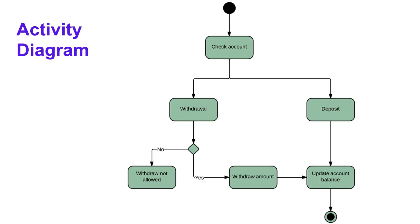Next, let's look at activity diagrams. Activity diagrams provide a visual representation of the sequence of actions or steps within a system or process, helping stakeholders understand how the system behaves. This diagram is suitable for questions asking you to draw the process flow of a situation. Using a banking withdrawal or deposit transaction as an example: the start is shown with a filled black circle at the top, and the end is shown with a black circle with a white border.